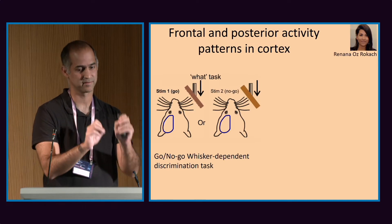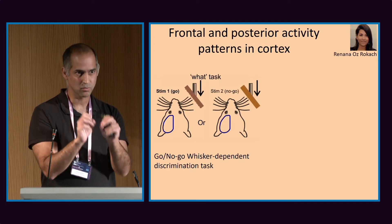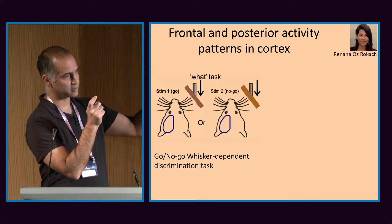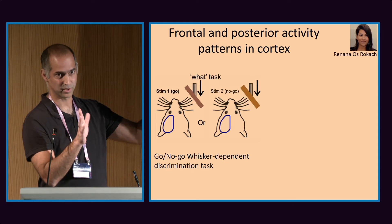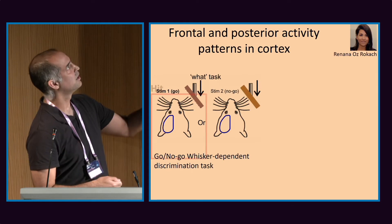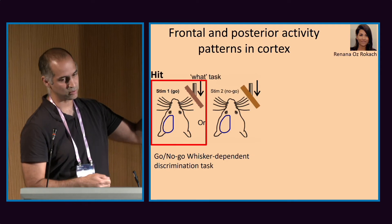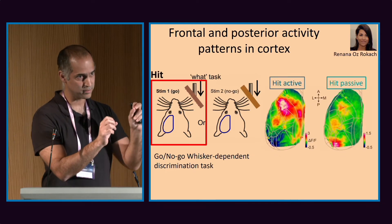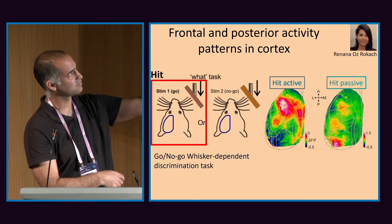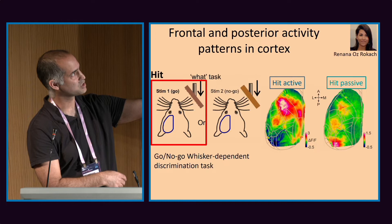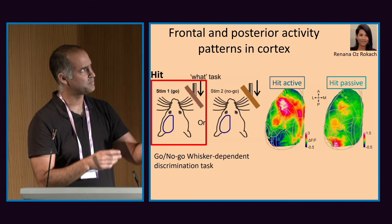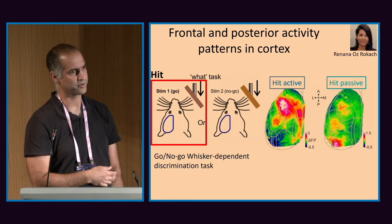We're doing a simple go/no-go whisker-dependent task. One texture the mouse needs to lick; the other texture, the mouse needs not to lick. No delay — simpler — four or five days to learn the task. We look at only HIT trials, but divide them based on active versus passive behavior. HIT active trials show frontal activity, especially in M2. HIT passive trials show a very different activity pattern, highlighting area P.